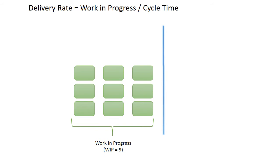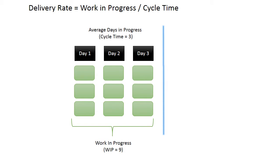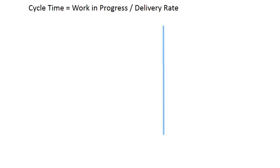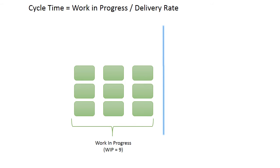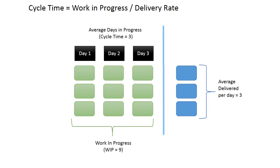Calculating delivery rate, if we have nine work items in progress, and each work item takes three days, then we can deliver three items per day. Cycle time works in a similar fashion, with nine work items in progress. Assuming you deliver three items per day, the cycle time must be three days.